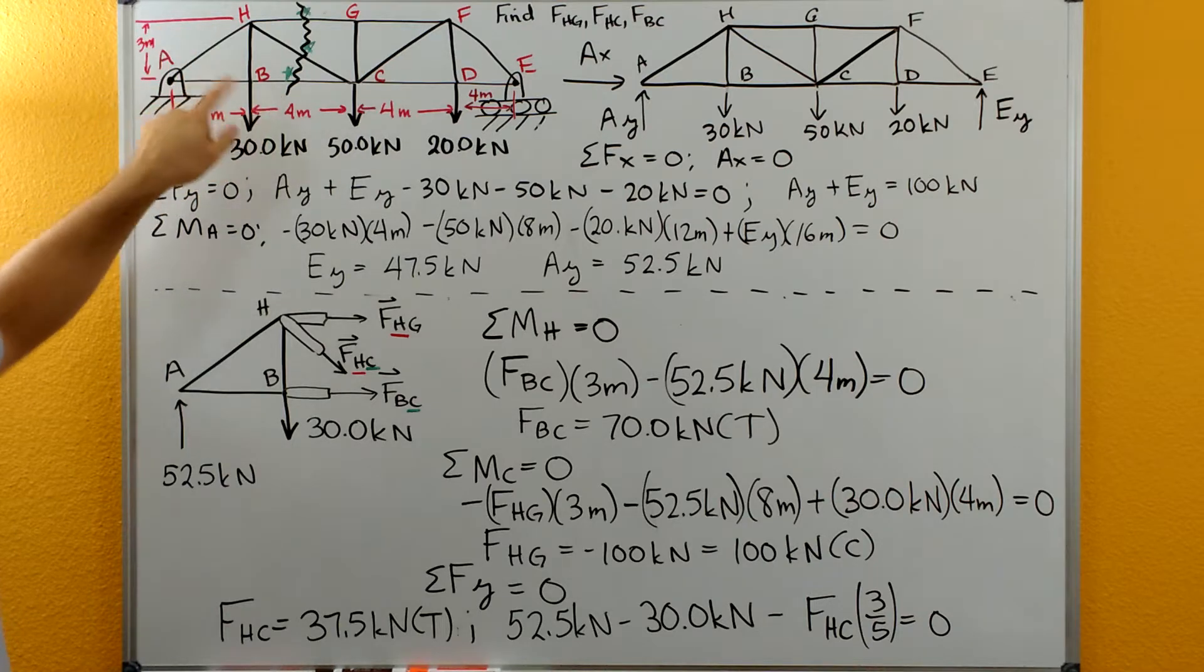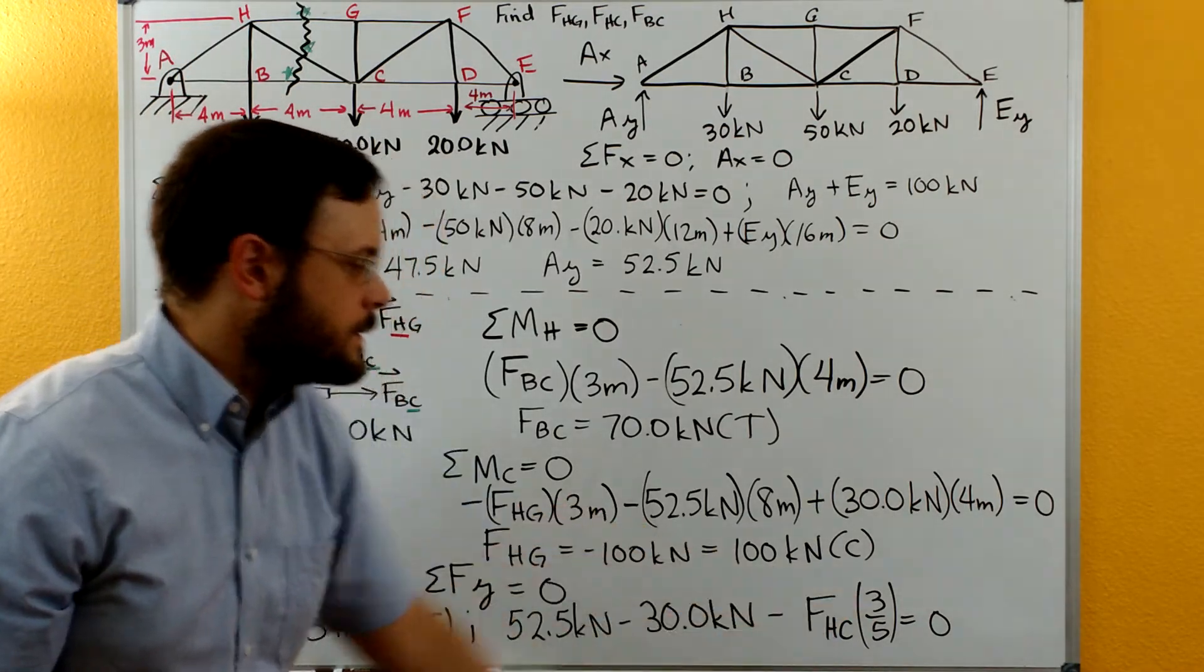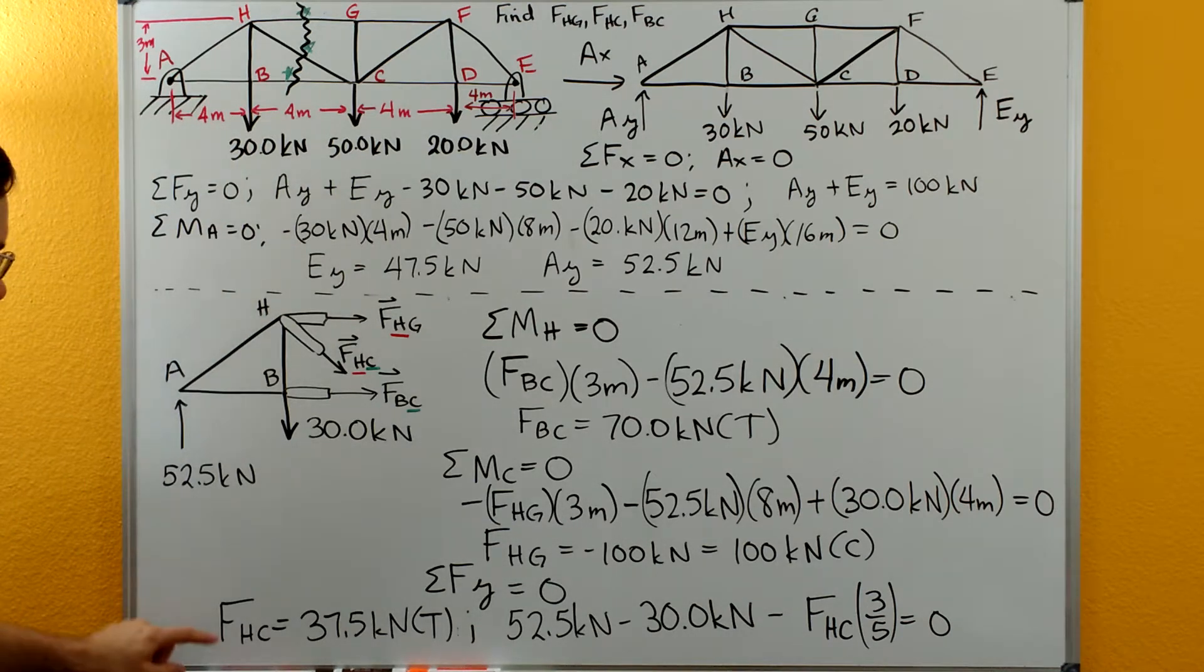It's a 3-4-5 right triangle on FHC, and the Y side is the 3-fifths portion. We can solve for that and get FHC equals 37.5. It's positive, so that force must be in tension.